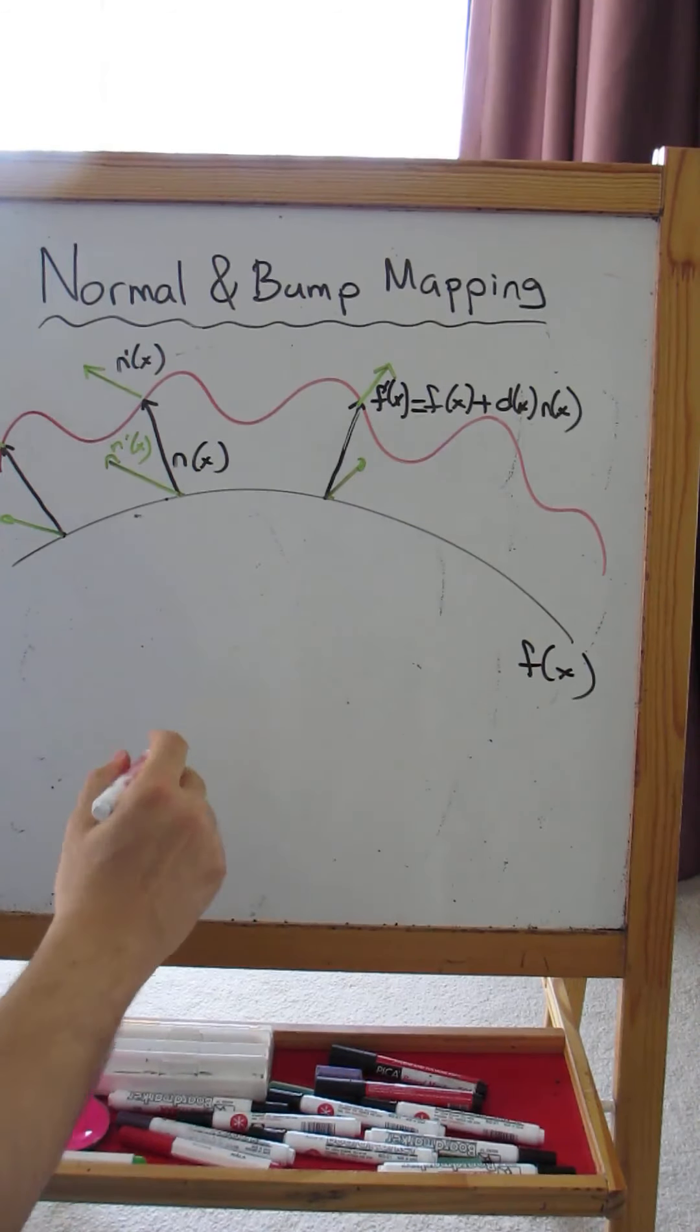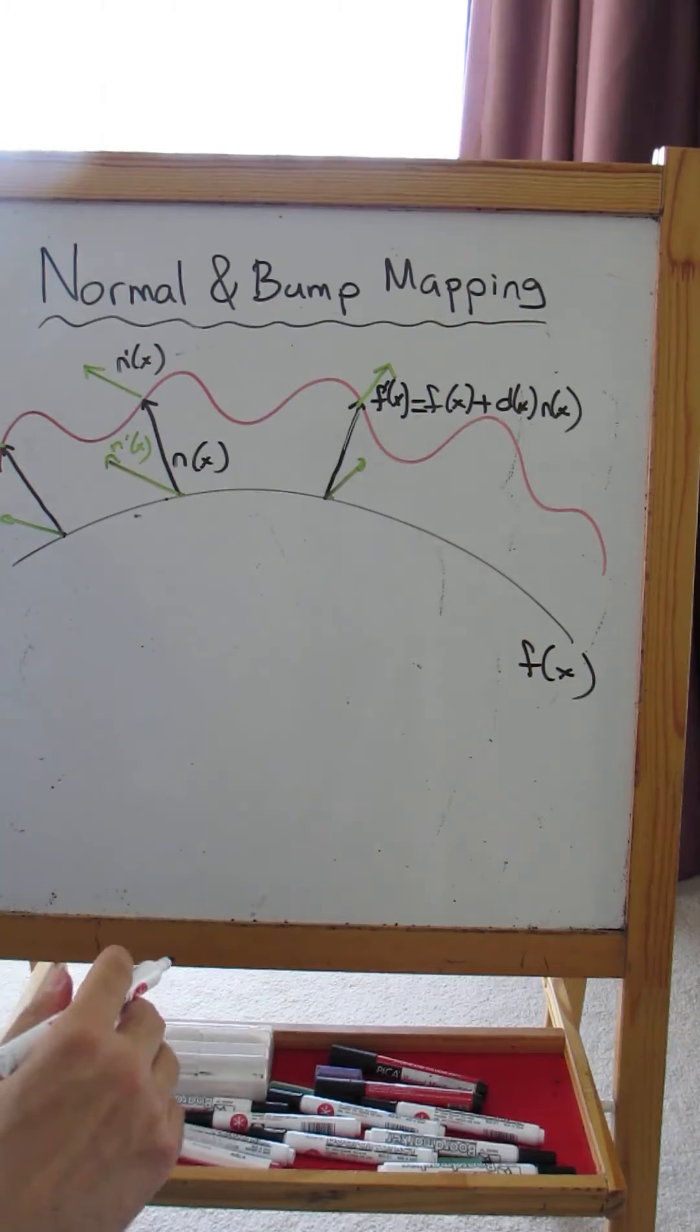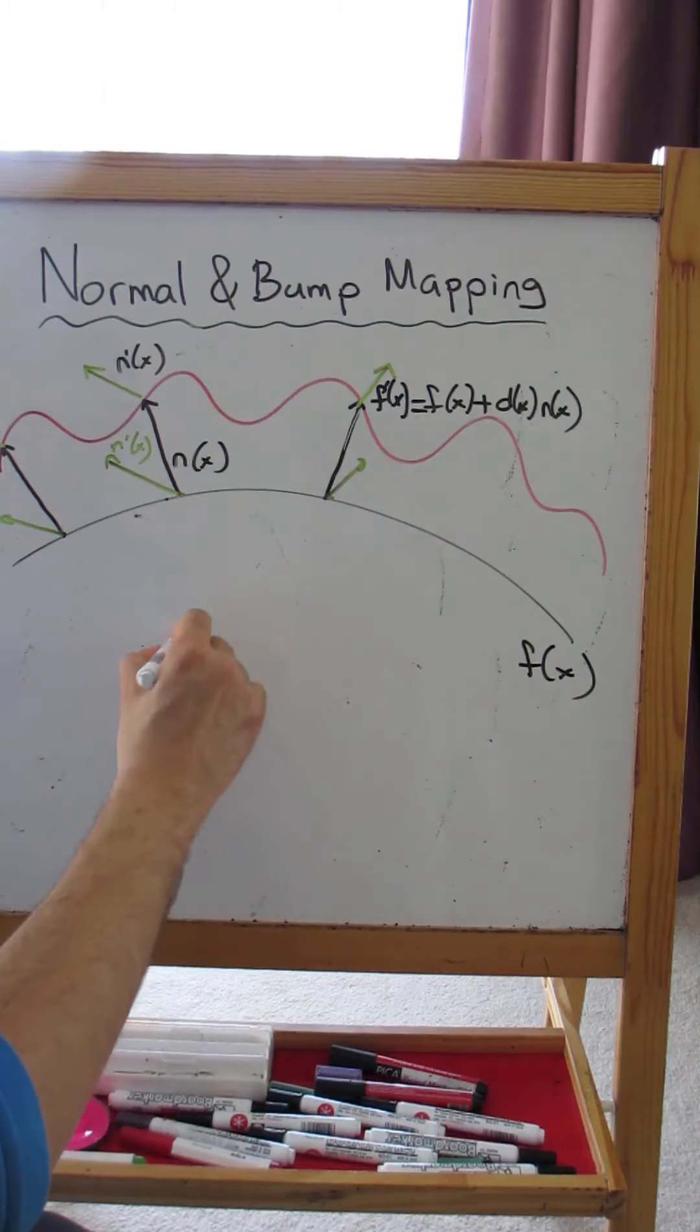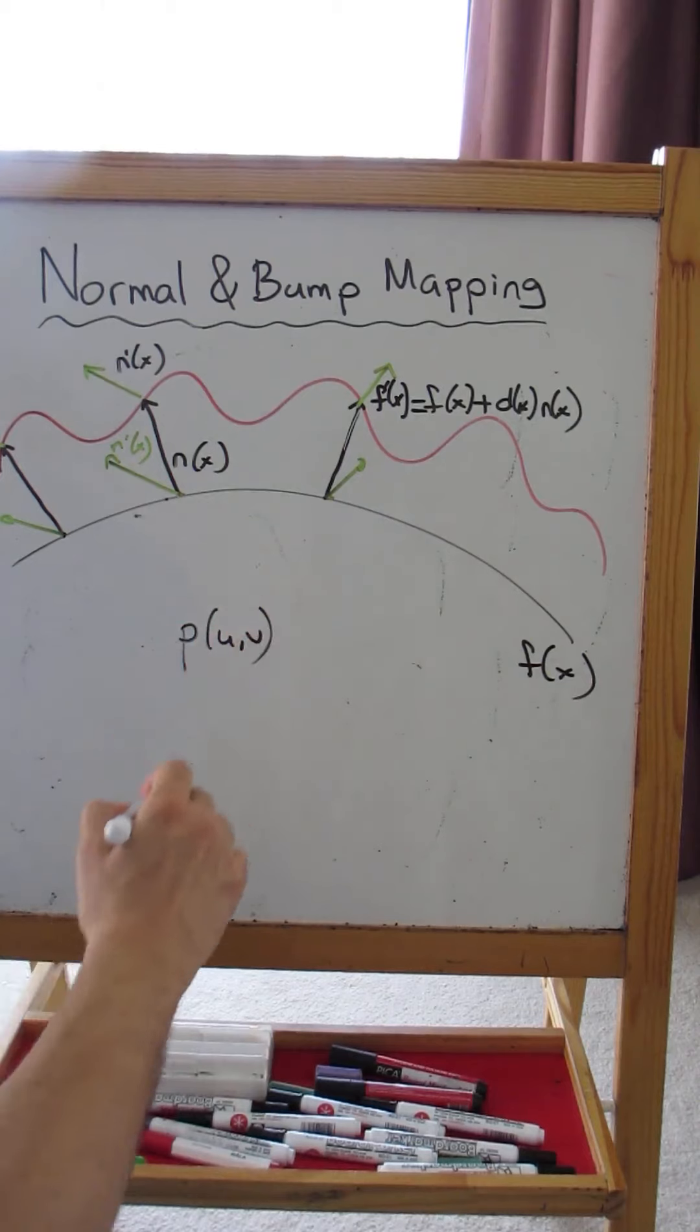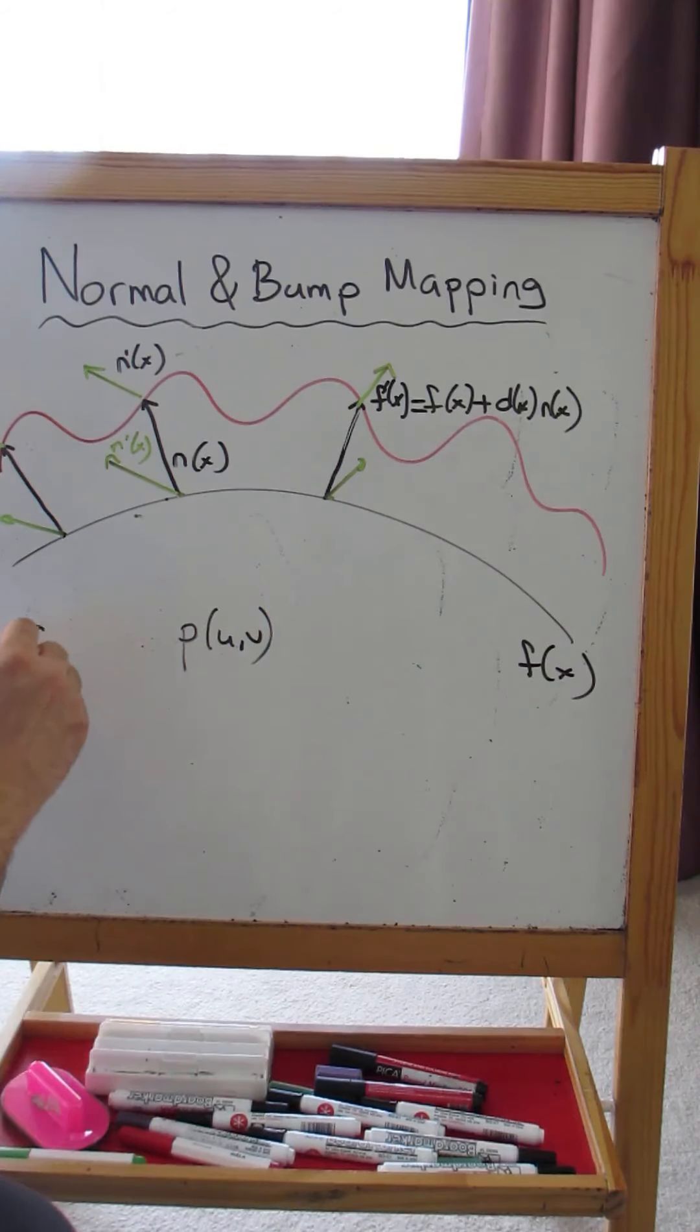Assuming that our original surface is parameterized as P(u,v), and our final surface, which is the bumped surface, is equal to Q(u,v).